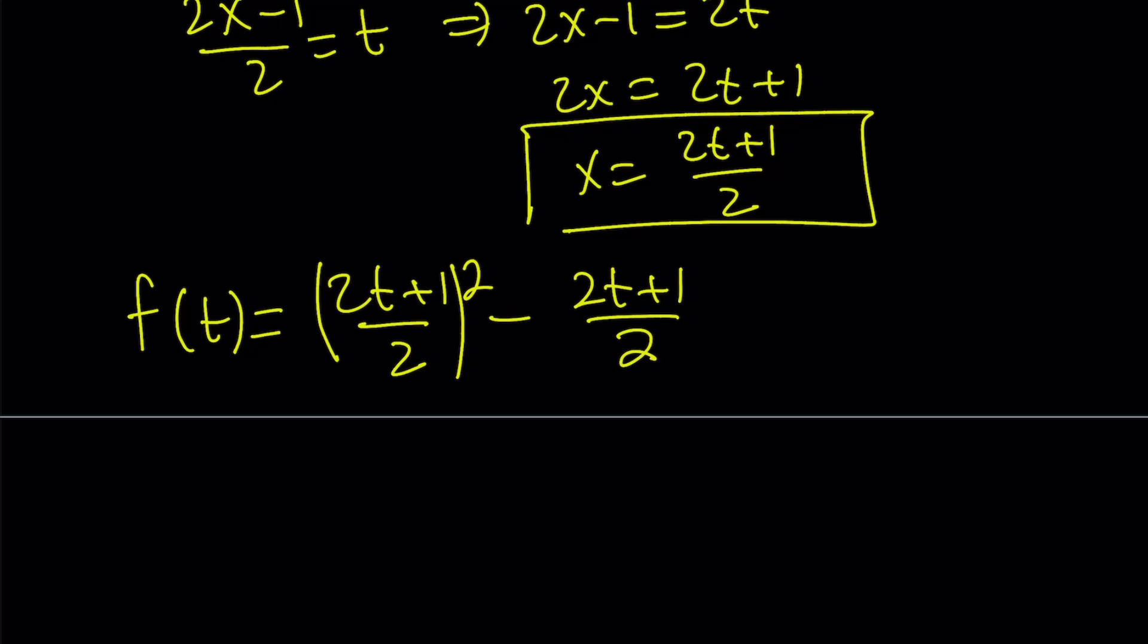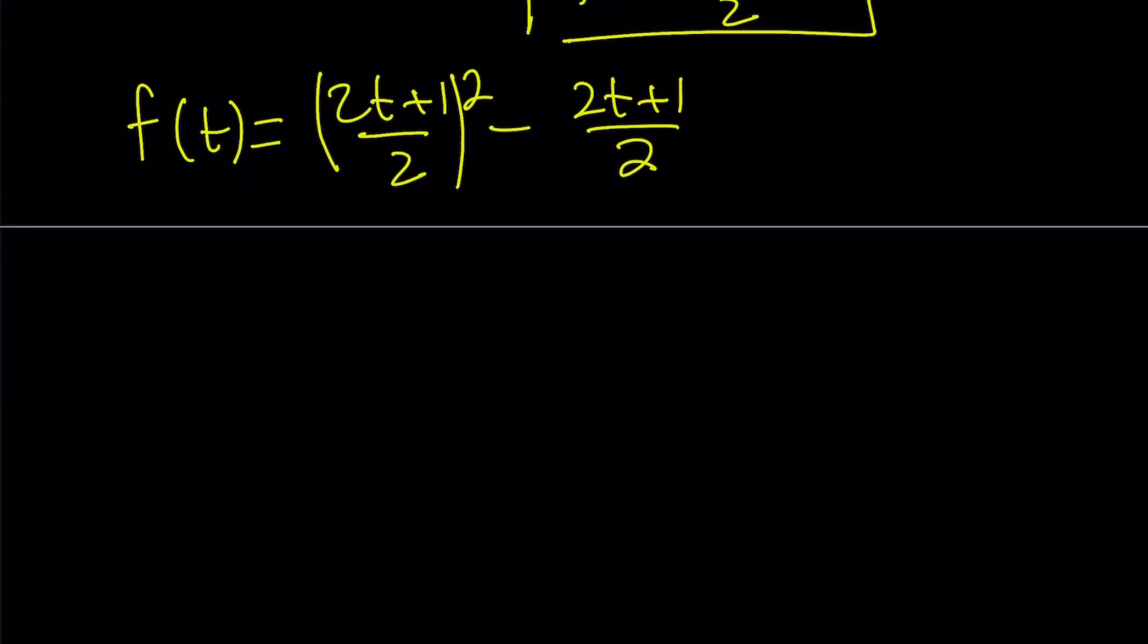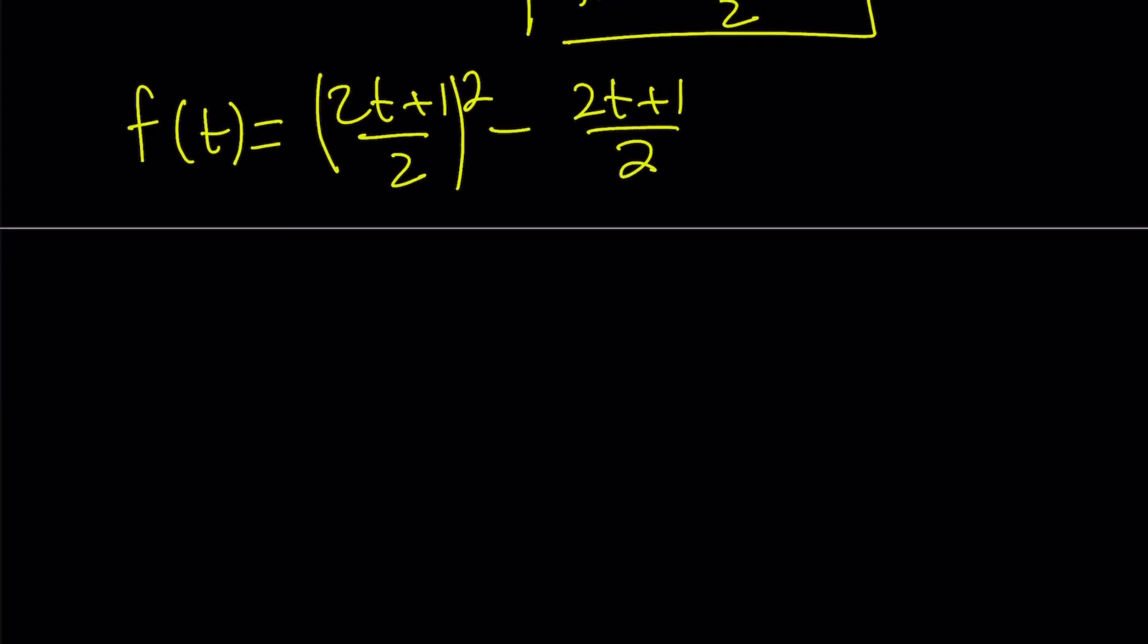Let's go ahead and simplify this in terms of t, and then we're going to turn it into x just by replacing t with x, because the variables don't matter here. So if you go ahead and square, 4t squared plus 4t plus 1, that is divided by 4.